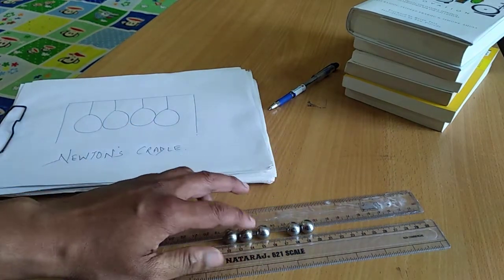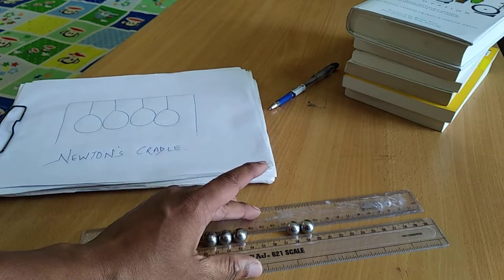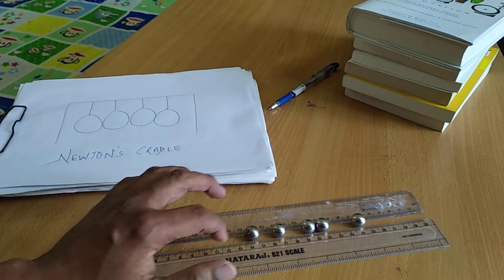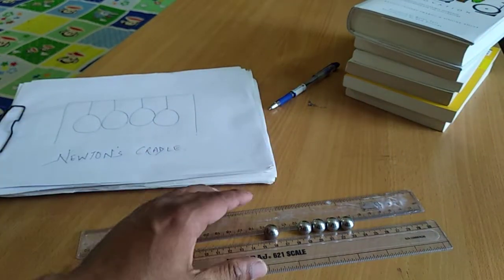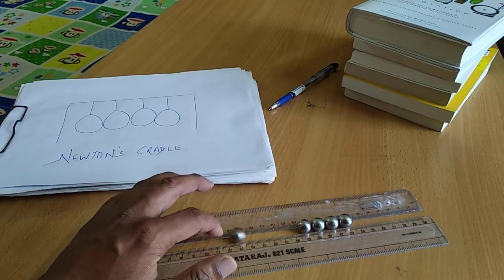What will happen if we take three? If I take three balls or three spheres and I hit them, you can see that three will go on the other side. So this experiment shows the conservation of momentum.